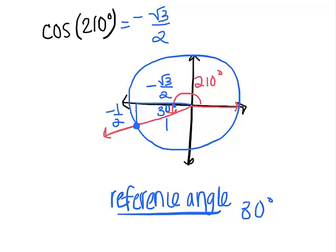So the cosine of 210 is negative root 3 over 2. Good luck everybody with your classwork.